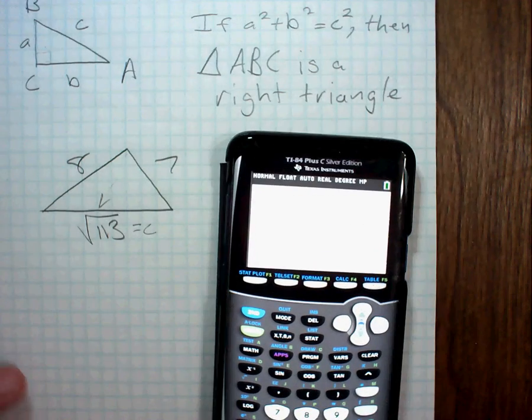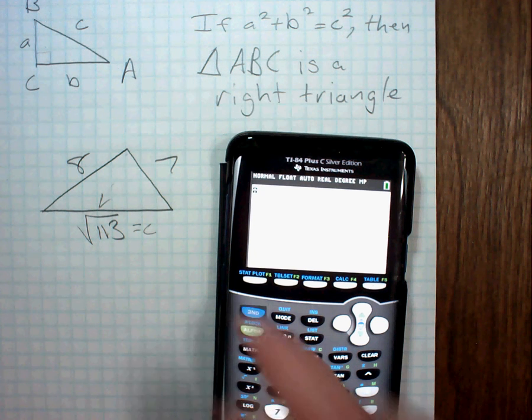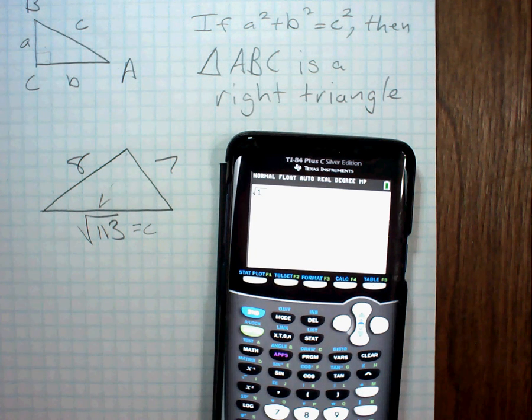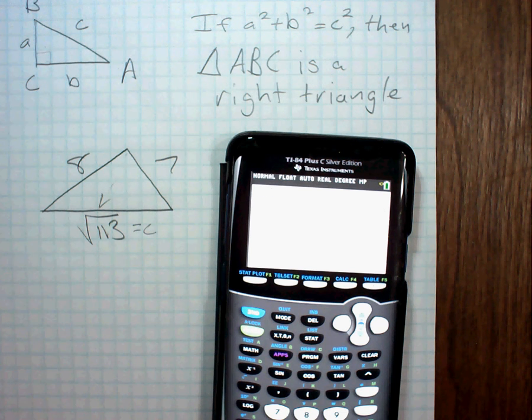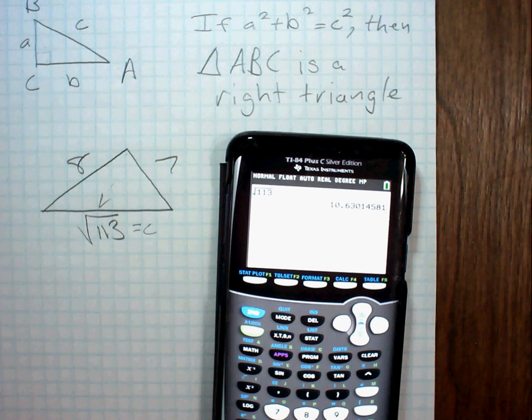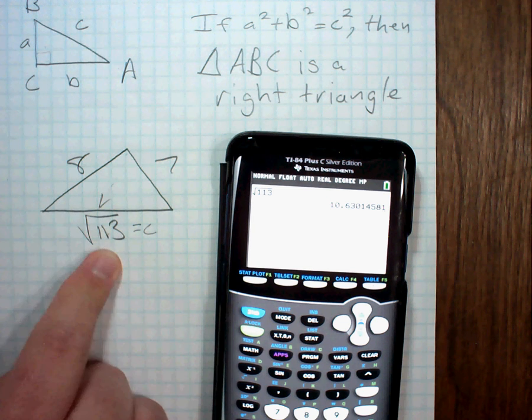We know that the square root of 113 is not going to come out to be a perfect integer, but let's see what it is. So, it's got to be greater than 10, because 10 squared equals 100. So, I've got 10.6 approximately.